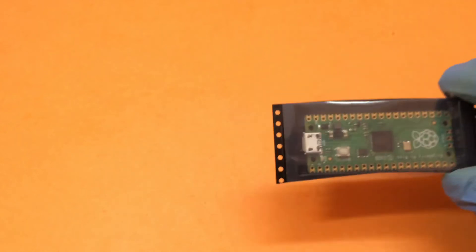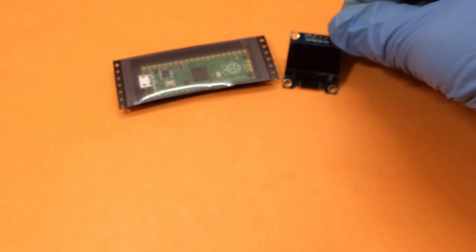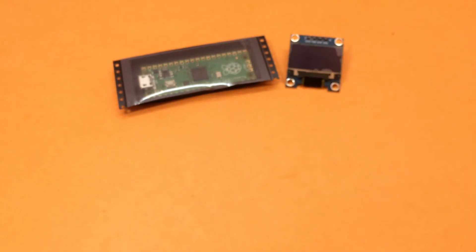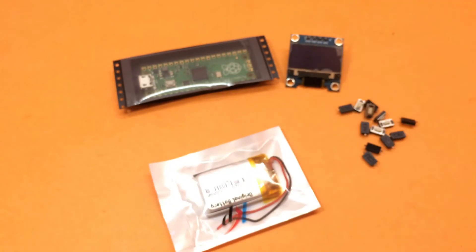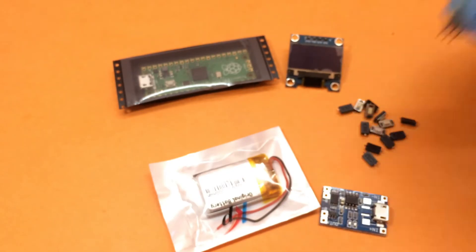For this project we will be going to need a Raspberry Pi Pico, an OLED display, 20 pieces of SMD tactile switches of dimension 3mm by 6mm, a LiPo battery, a LiPo charge circuitry, and a switch.